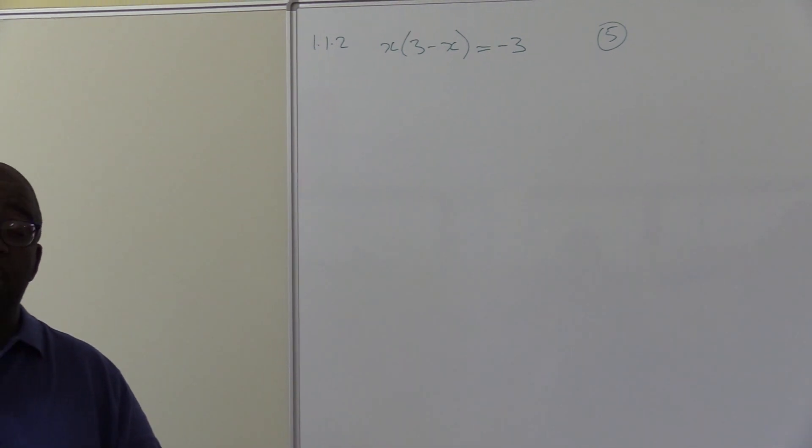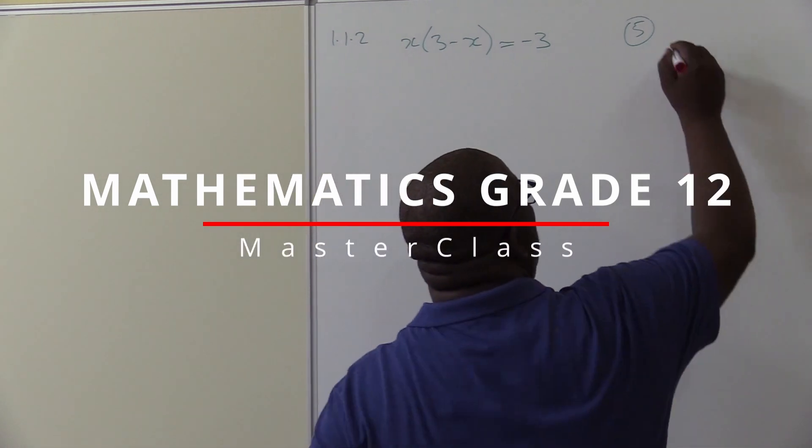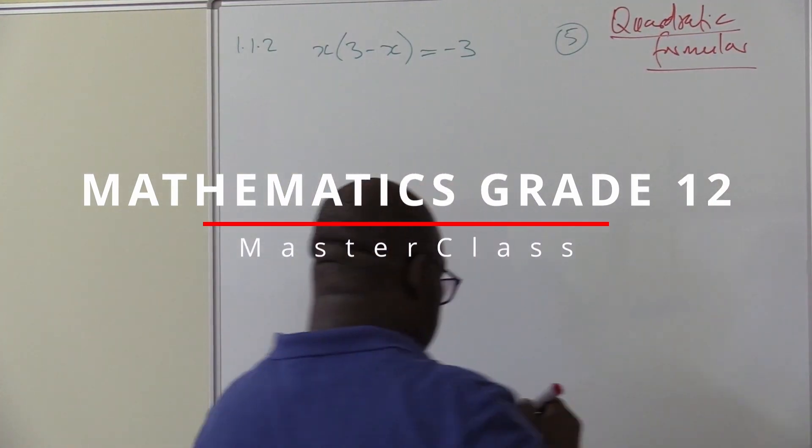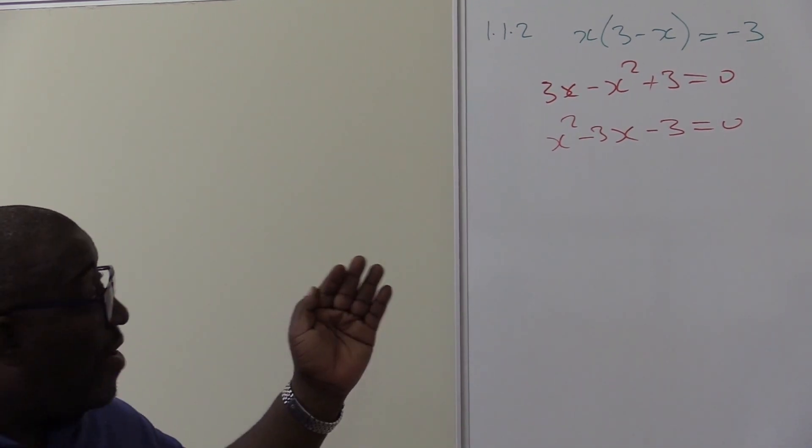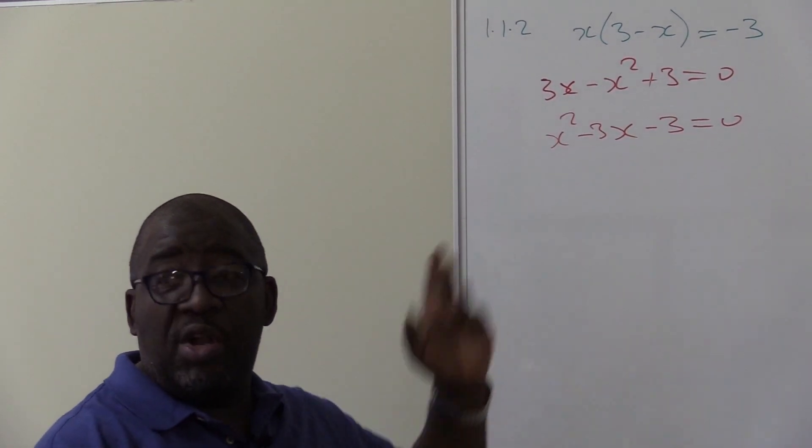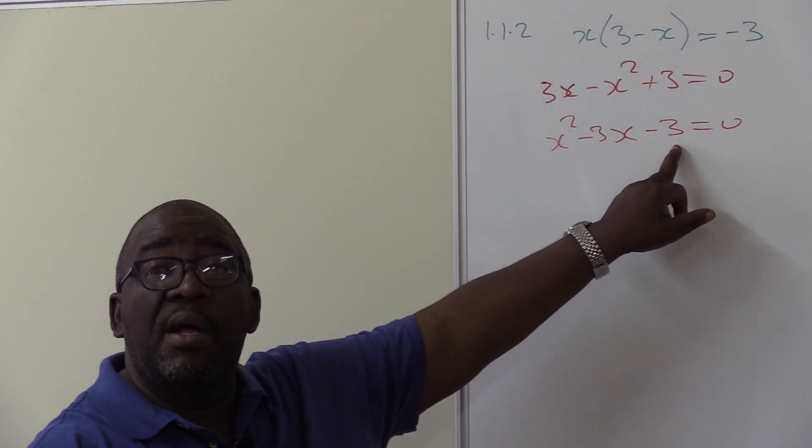What do you do if you don't find factors? Of course, we use what we call a quadratic formula. I want us to apply this formula. The first step when you factorize is to look for a common factor. Do we have a common factor here? No, we don't have a common factor.